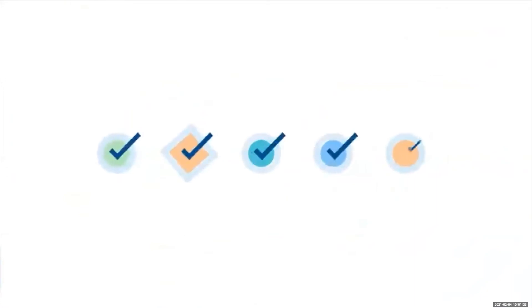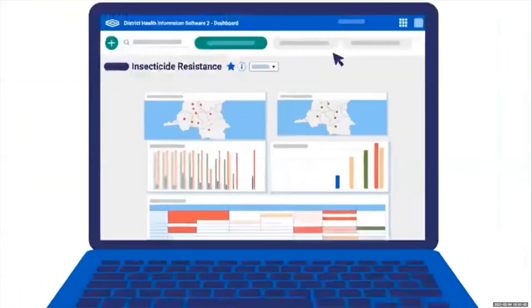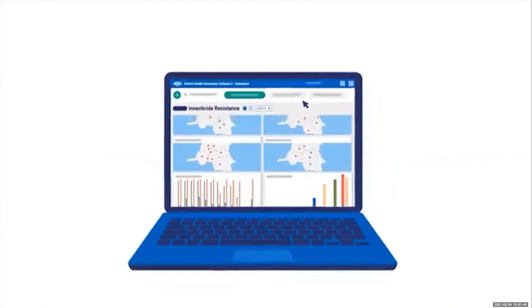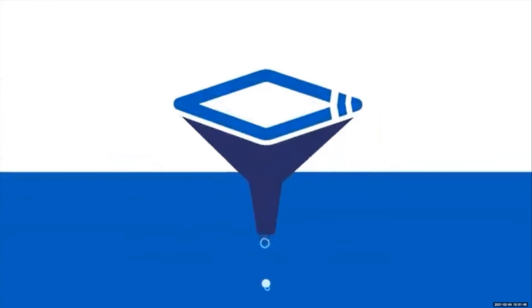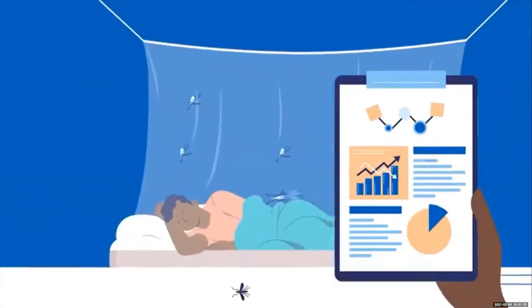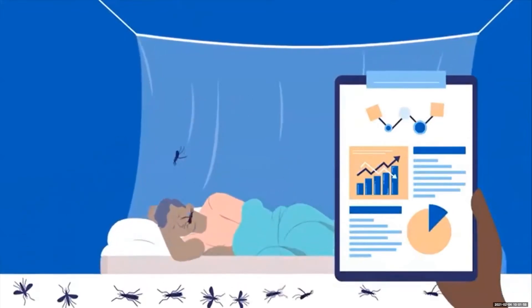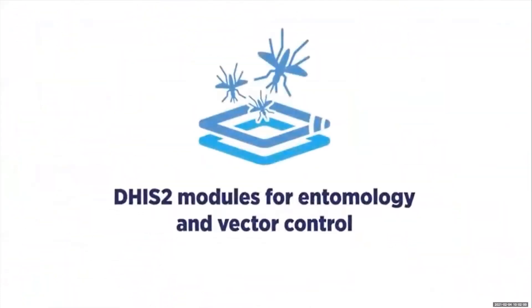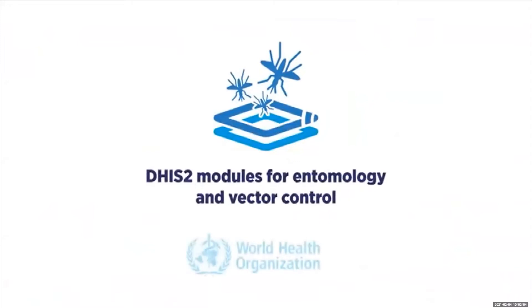Once in DHIS2, you can review and validate the data, visualize it in automatically generated maps, graphs, and tables, and create and share thematic dashboards tailored to inform specific decisions. This free tool can help you transform entomological and vector control data into information that will help guide and optimize the deployment of vector control interventions in a timely and efficient manner. Visit our website and download the DHIS2 entomology and vector control modules today.